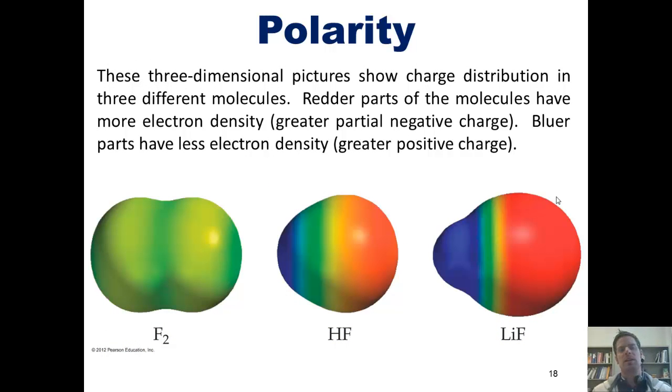These three-dimensional pictures show charge distribution in three different molecules. Redder parts of the molecules have more electron density, that is, a greater partial negative charge, and bluer parts of the molecule have less electron density, that is, a greater positive charge. You'll notice that in the molecule F2, where both of the atoms, fluorines, are equally electronegative, there's a completely even sharing of electron density.